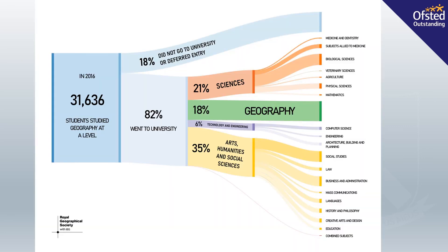Geography is highly valued by universities as an A-Level choice and it is a facilitating subject. This means it is a subject most likely to be required or preferred for entry to degree courses, and choosing a facilitating subject will keep more options open for university. It really is a great subject to study and can lead to lots of different career options. Thank you for listening.